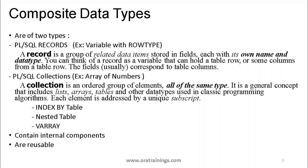Looking at composite data types, there are two types: PL/SQL record and collection. A record is a group of related data items. Like in a database table, when you execute a SQL query, you get a record consisting of a number of columns, each of which may have a different data type — a collection of elements with different data types, similar to a row of a PL/SQL query result.